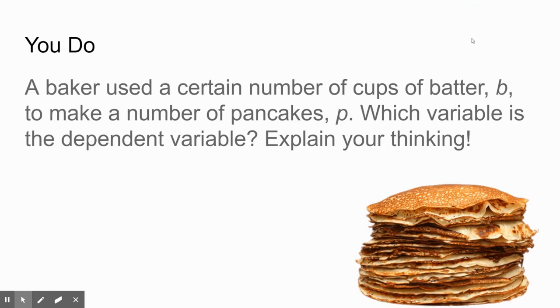In today's you do problem, you have a baker who used a certain number of cups of batter B to make a number of pancakes P. Which variable do you think is the dependent variable? Make sure to explain your thinking so you don't just get to write one variable is independent and the other one is dependent. Why did you choose the dependent variable? Explain why. It means you need to write at least a sentence.